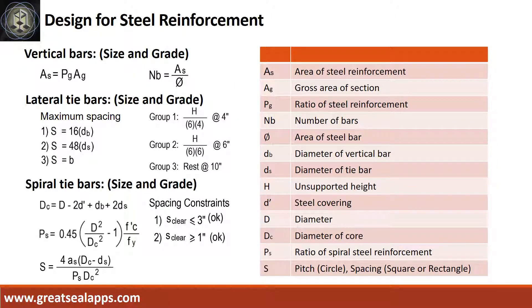Solve the area of steel and the number of vertical bars. Follow the computation of lateral tie bars for square and rectangular column, and the computation of spiral tie bars for circular column.